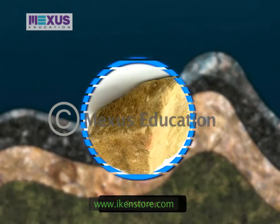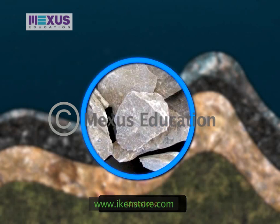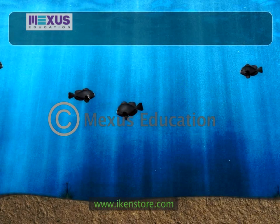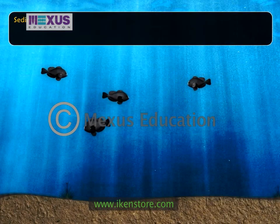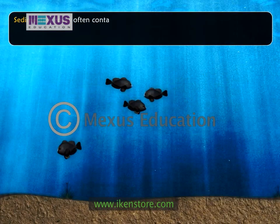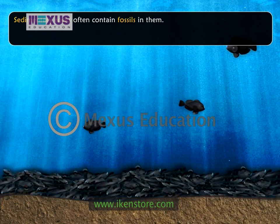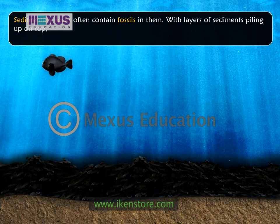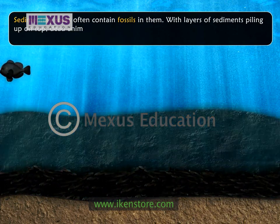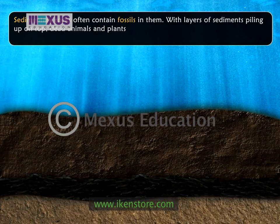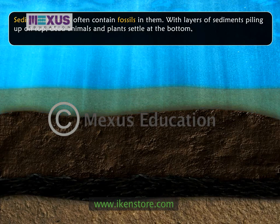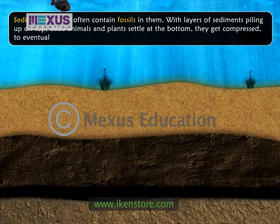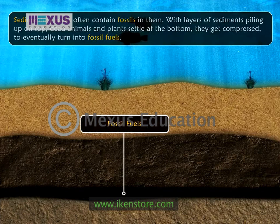For example, sandstone, limestone and shale. Sedimentary rocks often contain fossils in them. With layers of sediments piling up on top, dead animals and plants settle at the bottom. They get compressed to eventually turn into fossil fuels.